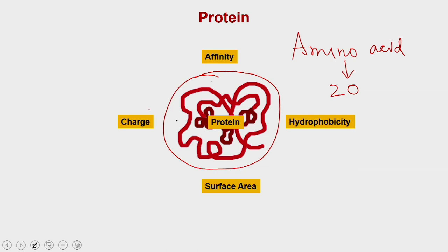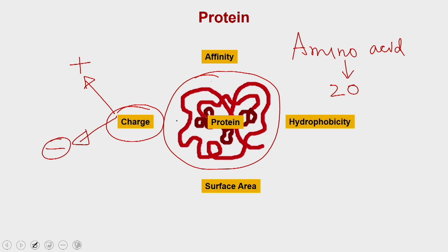A protein could have charge — it could have negative charges if it has acidic amino acids, or positive charges if it has basic amino acids. Not only the charge, but the distribution of these charges on the protein may also vary between two different proteins, and accordingly their affinity or distribution for the matrix could be different. So charge is one of the properties which can be exploited for chromatography.